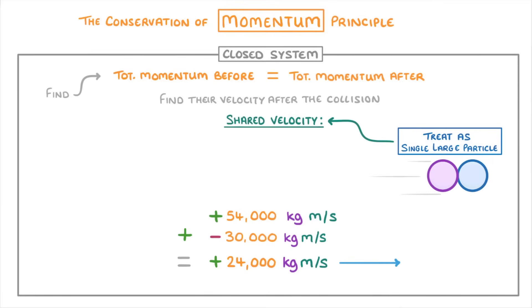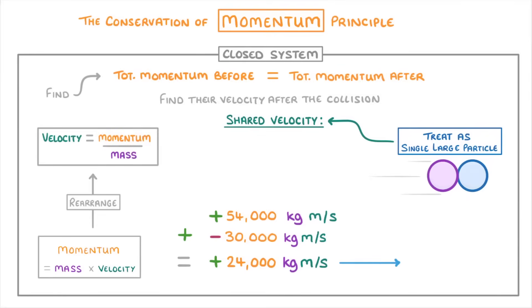So to work out their shared velocity, all we have to do is rearrange our momentum equation to show that velocity equals momentum divided by mass, and then plug in the values for this combined particle. So 24,000 divided by their combined masses from before, which would be 4,500 for the dinosaur, plus 1,200 for the car. So 5,700 kilos. Which gives us a velocity of 4.4 m per second to the right.